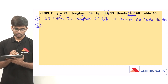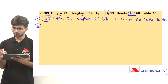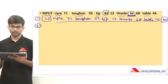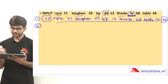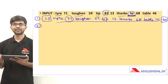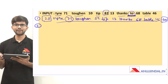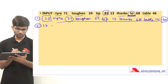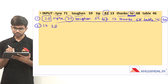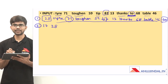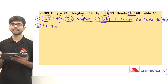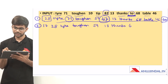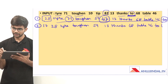Now step 2. Leaving aside the placed number 28 and the placed word 'to', from the remaining 10 elements, the largest number is 71. Reversing 71 gives 17, which moves to the leftmost position. From the remaining words, the word with the fewest letters is 'tip' with three letters, so 'tip' moves to the last. Step 2 is: 17, 28, tire, toughen, 59, 13, thanks, 68, table, 46, 2, tip.